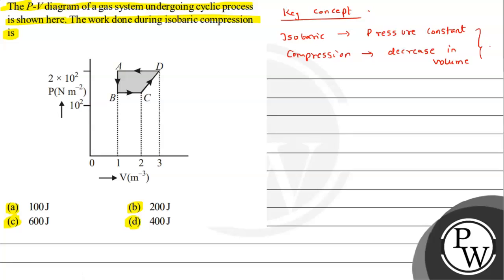Secondly, the important thing is work done. Work done we find area under PV curve with volume axis. Area under PV curve with volume axis gives us work done. So this is the important thing we need to remember.